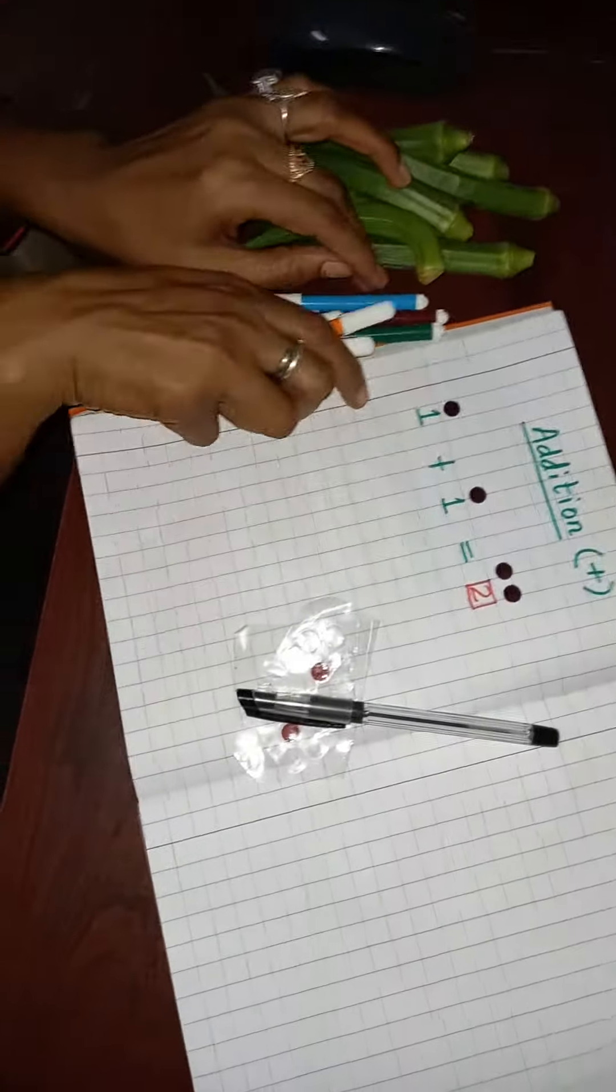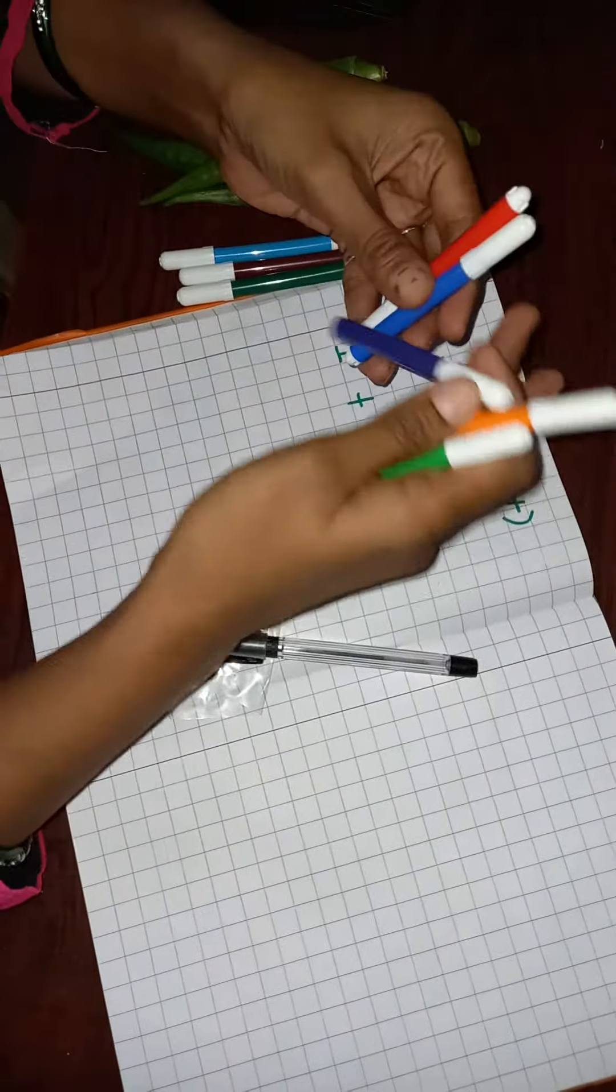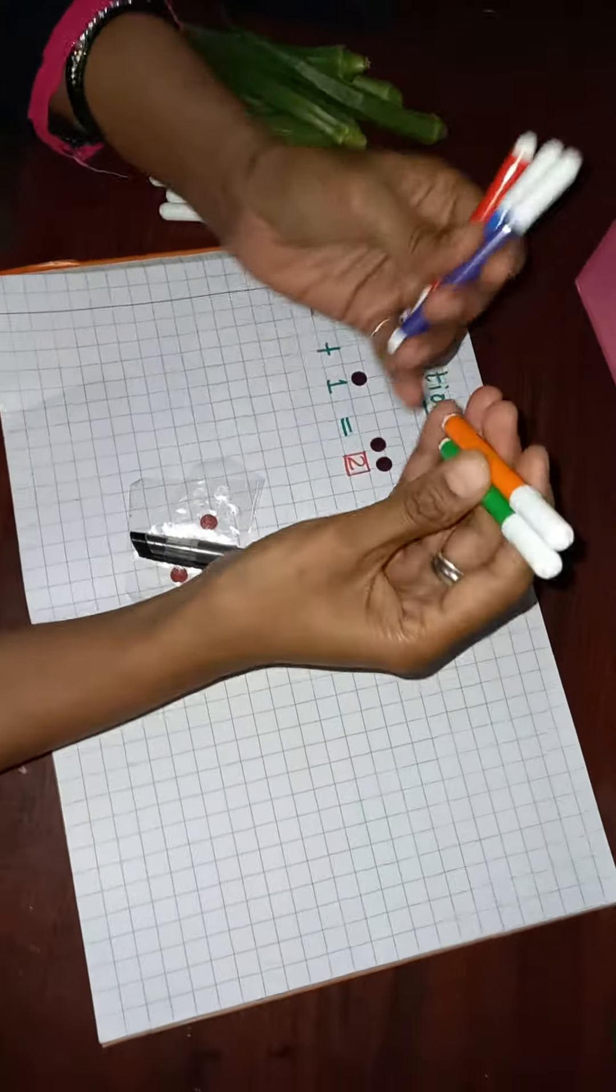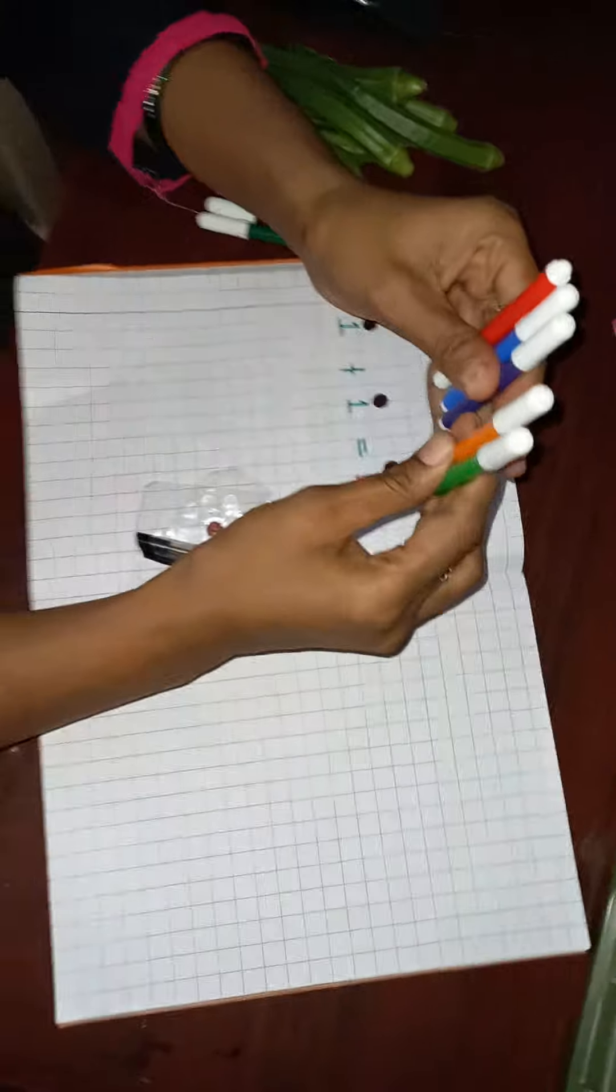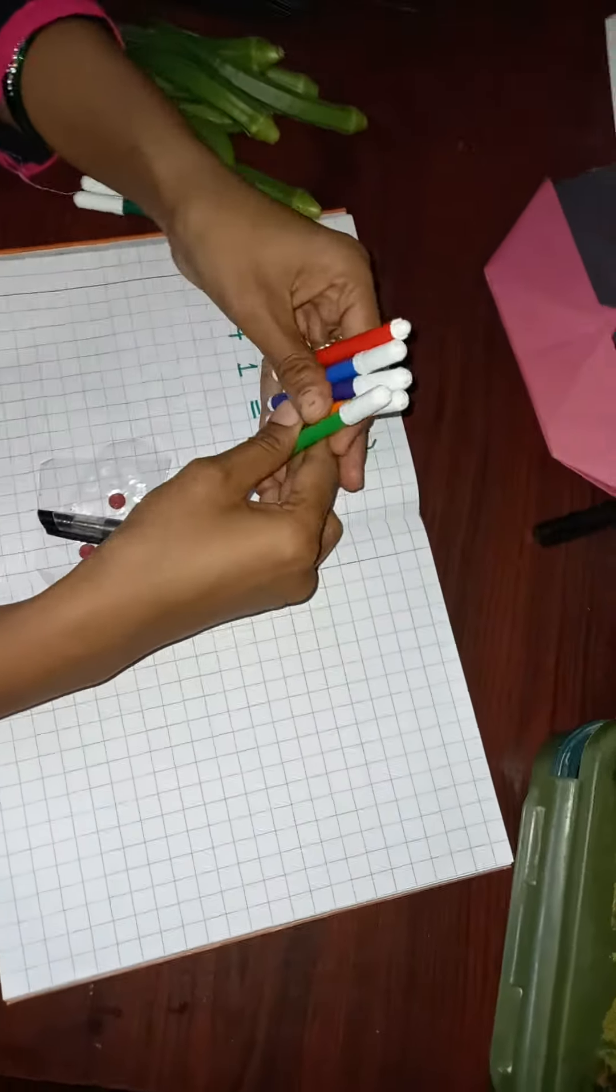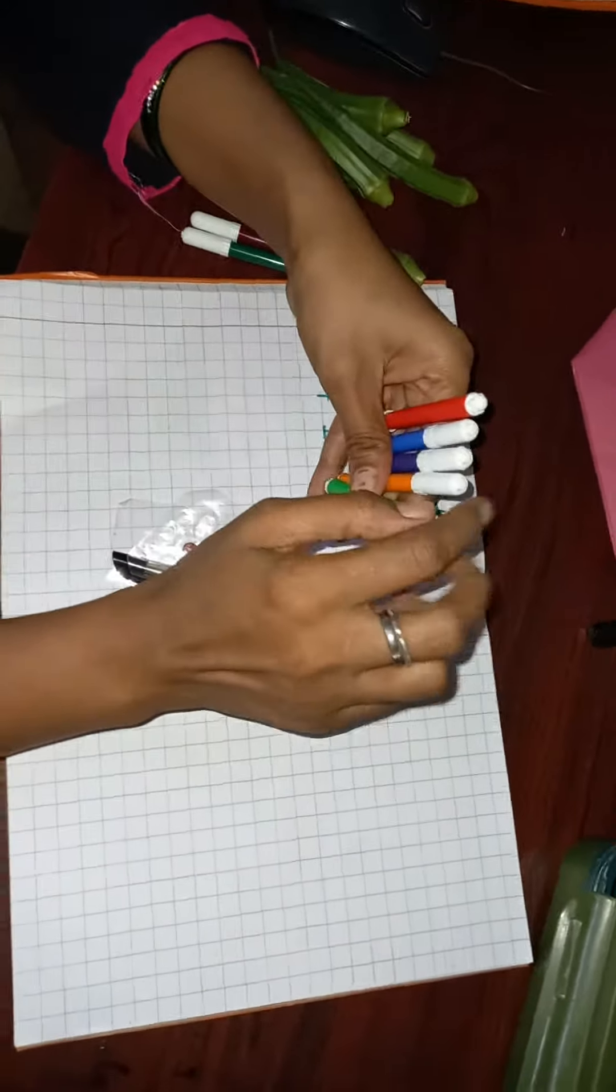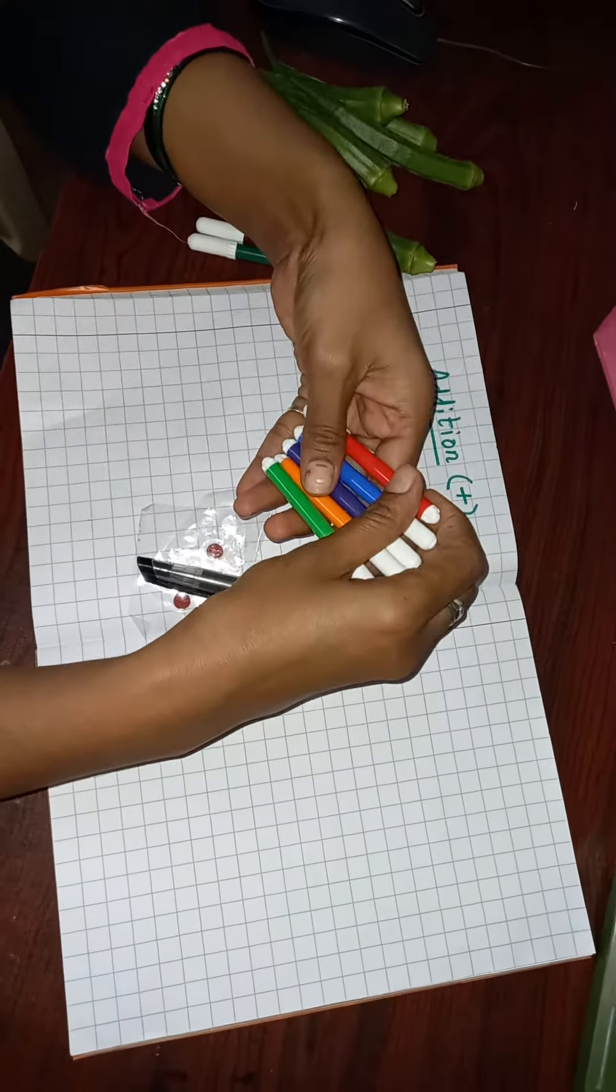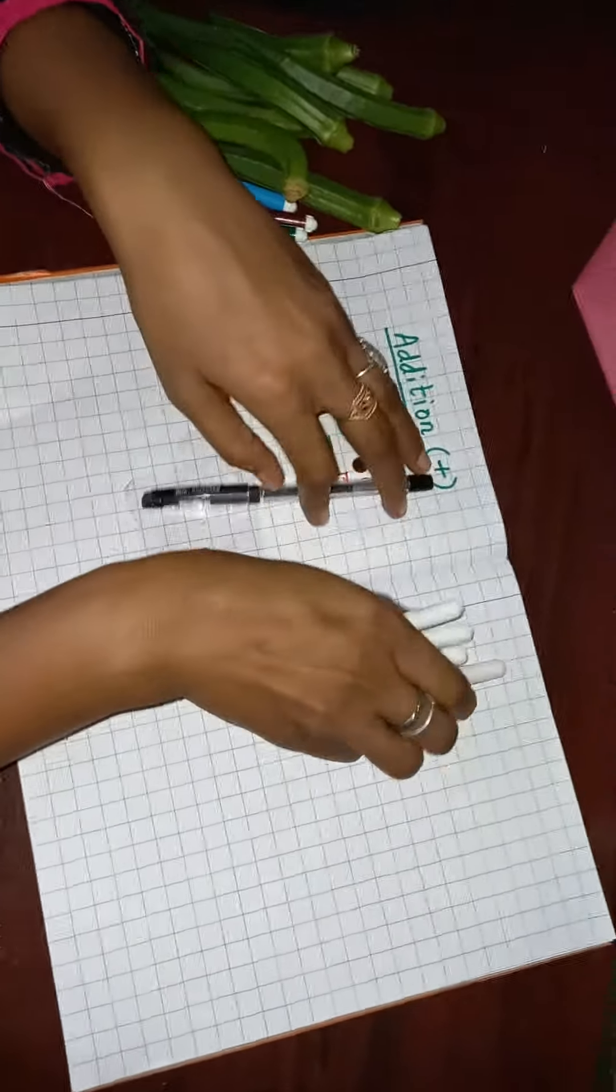Now let's see another example. We have three sketch pens and we will take two more sketch pens. Combine both and count it: one, two, three, four, and five. Your answer is five.